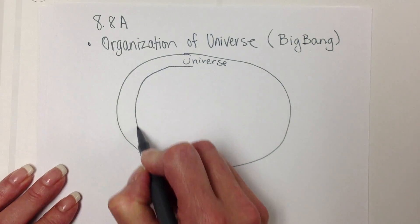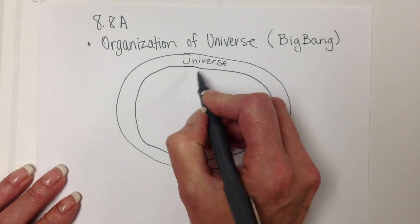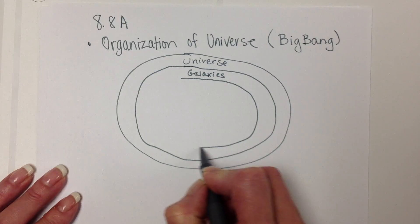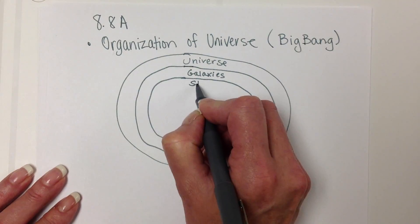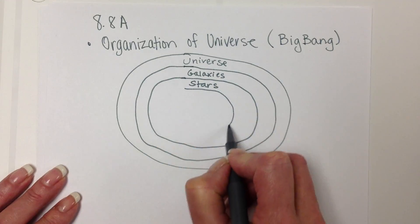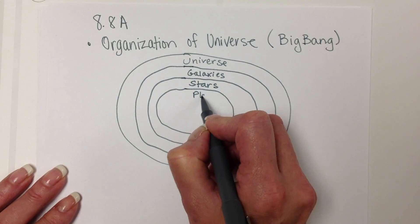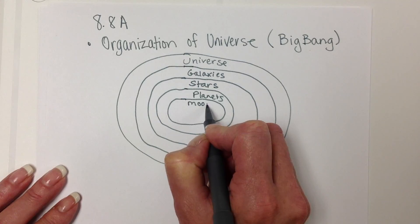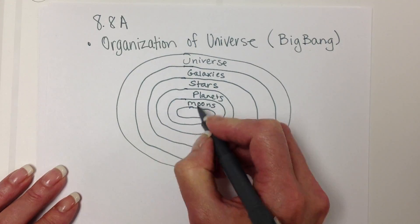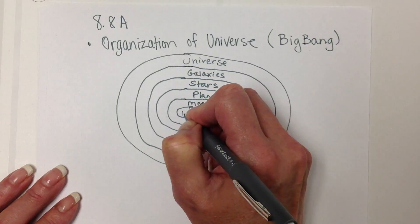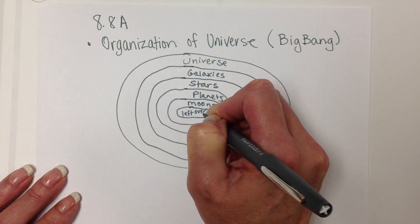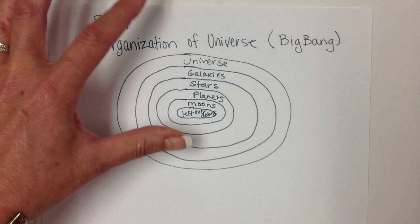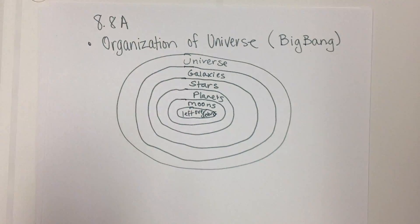Within the universe, you would find billions of galaxies. Within galaxies, you would find billions of stars. Accompanying stars, you may find planets, and accompanying planets, you may find moons. And then there's leftover debris out there as well, such as meteoroids. That's going from the biggest to the very smallest thing in our universe.